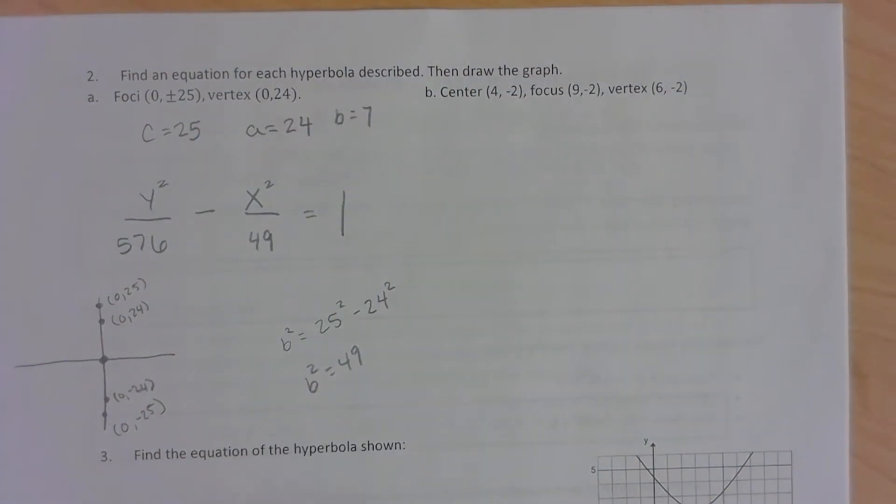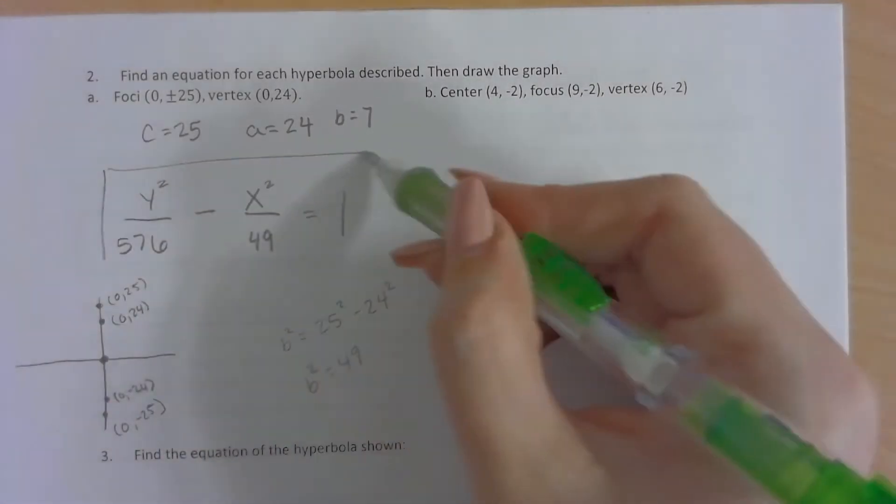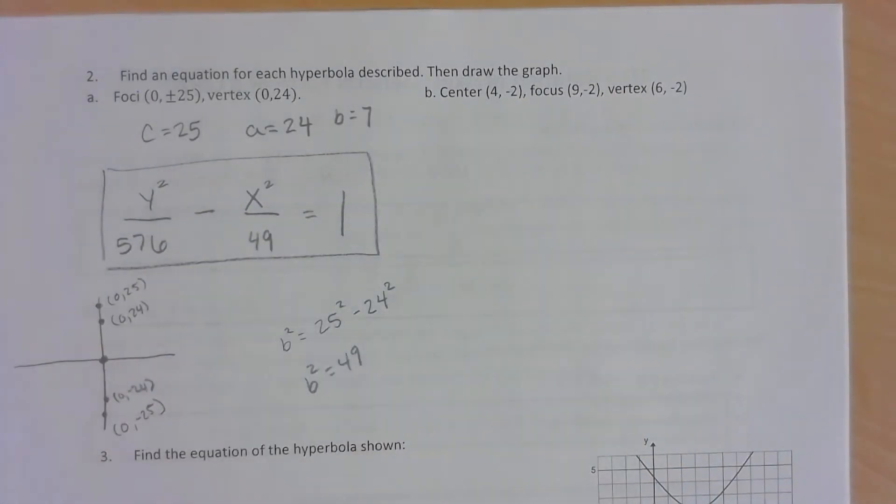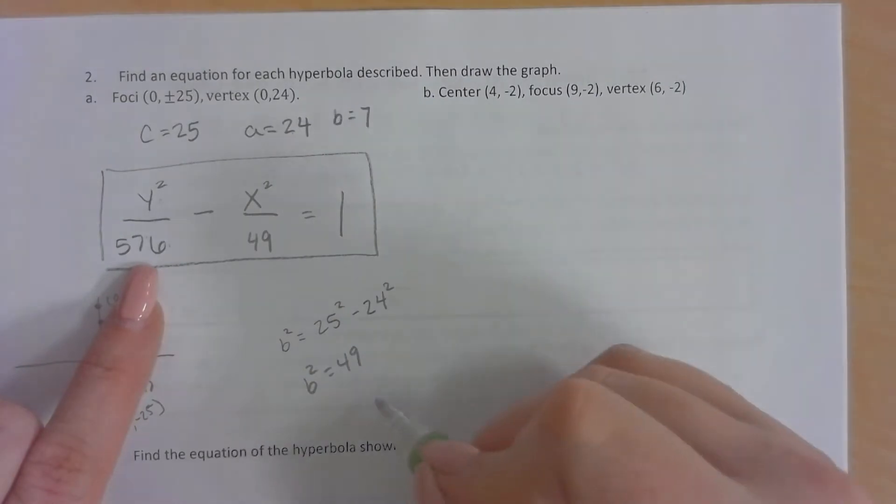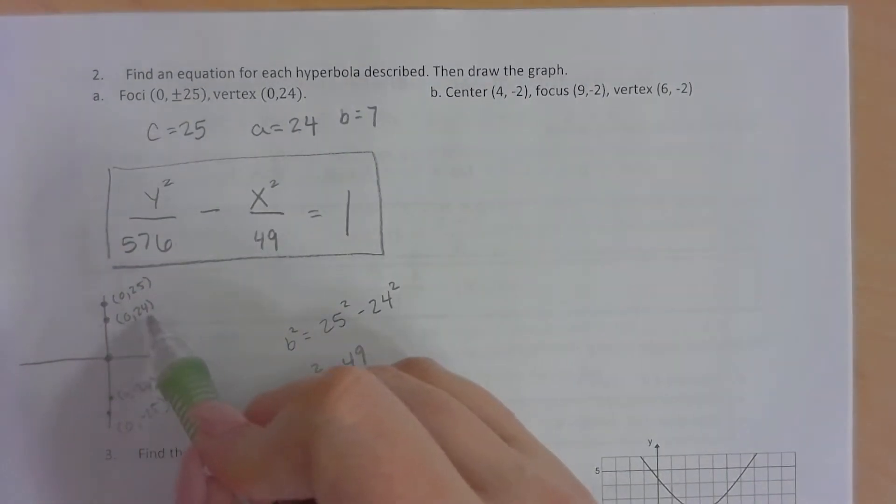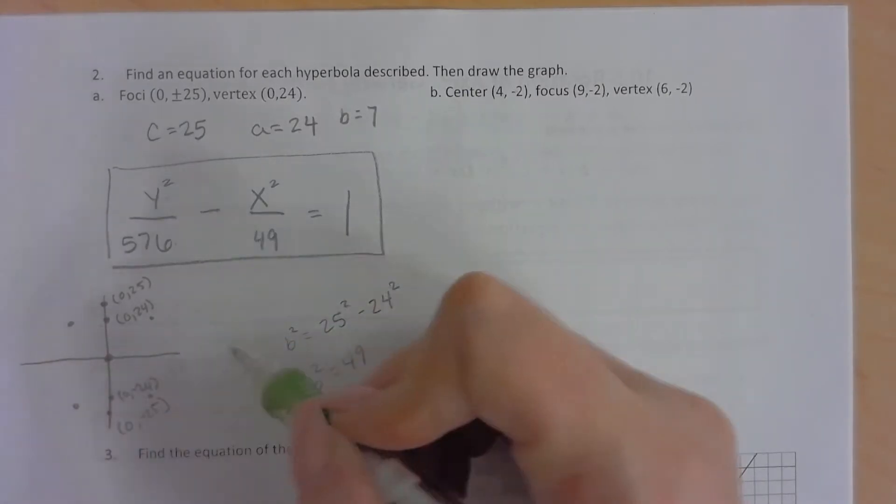Now it does want us to write the equation. So I wrote the equation, but it did ask us to also graph. So I need to continue graphing here. So when we graph this, we need to know the slope. So the slope here is always y over x. So the y in this case would be 24 over 7. So it'll be up 24 over 7, up 24 over 7, down 24 over 7, down 24 over 7.